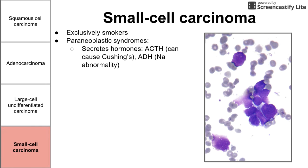One example is that small cell carcinoma secretes hormones. We might see a release of ACTH, which can cause Cushing syndrome. We might see a release of antidiuretic hormone, which can cause low sodium — a sodium abnormality. These are proteins produced by the small cell carcinoma that have systemic effects throughout the body, usually kept in balance but thrown off by the carcinoma. It can also cause Eaton-Lambert syndrome, which is a neurologic disorder — another paraneoplastic syndrome worth looking up.